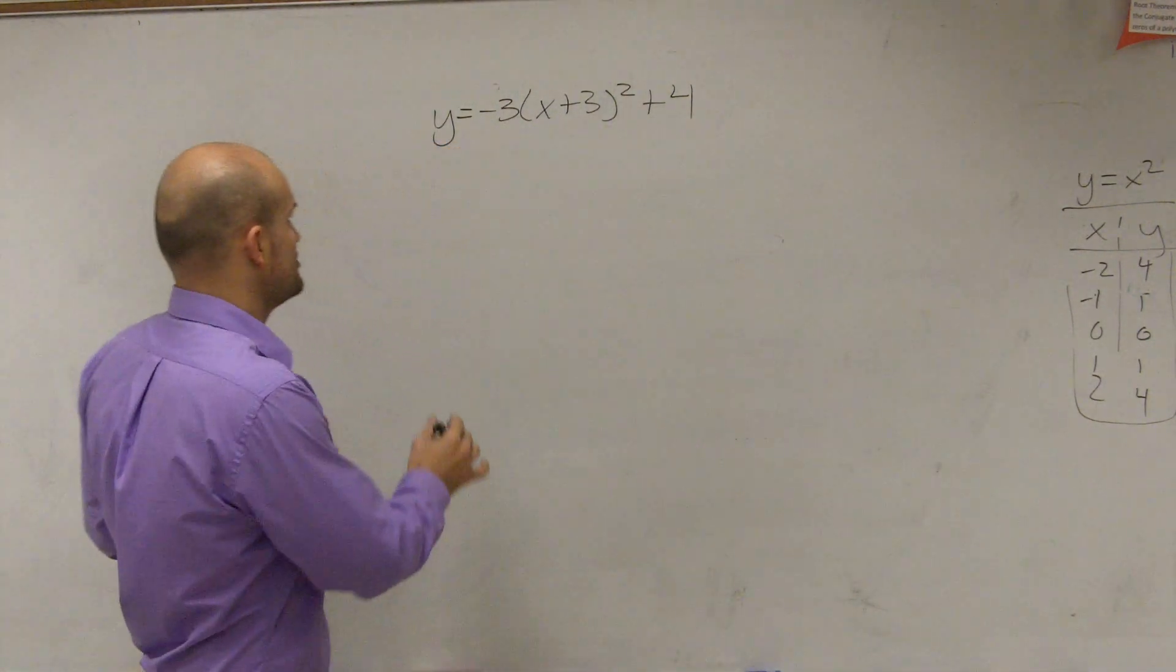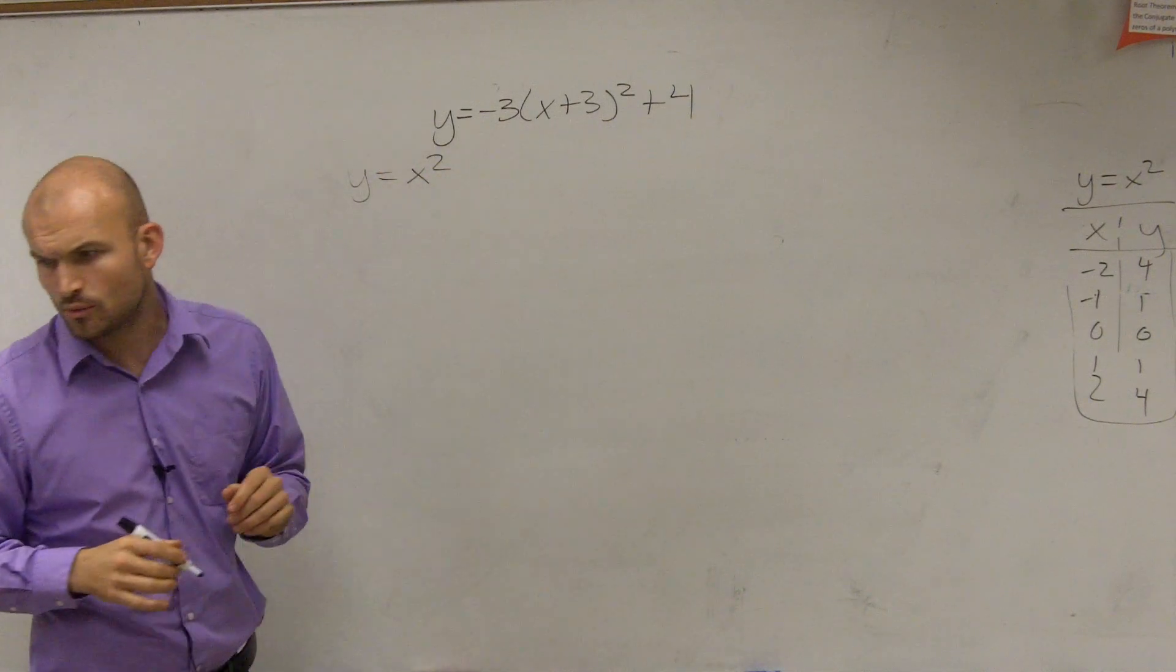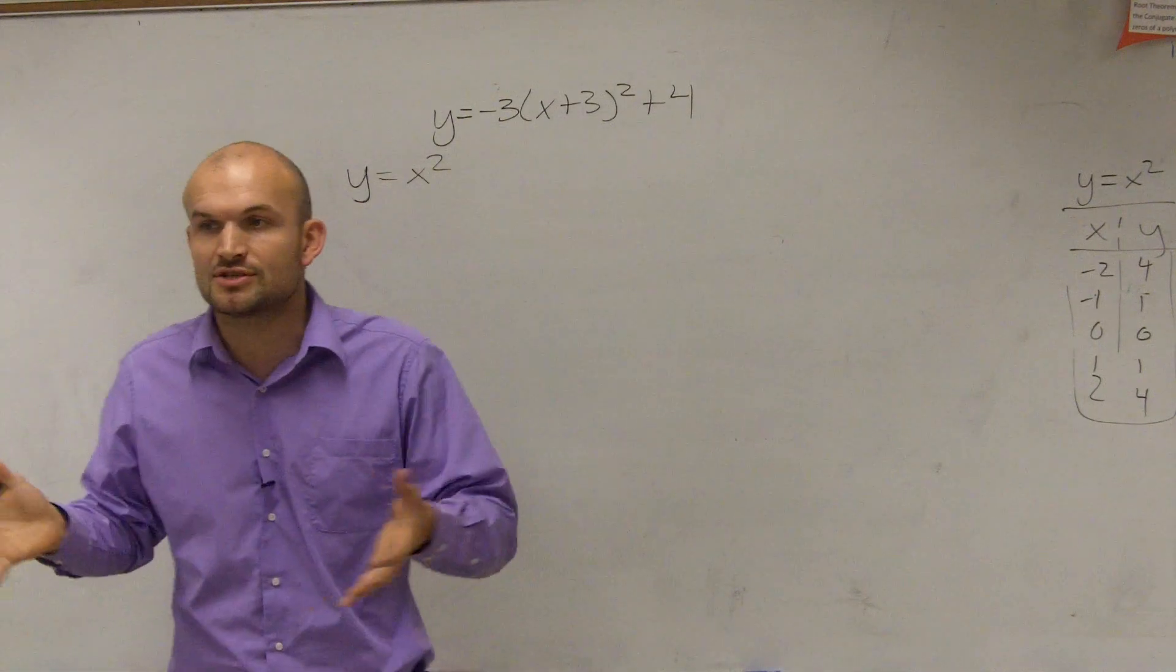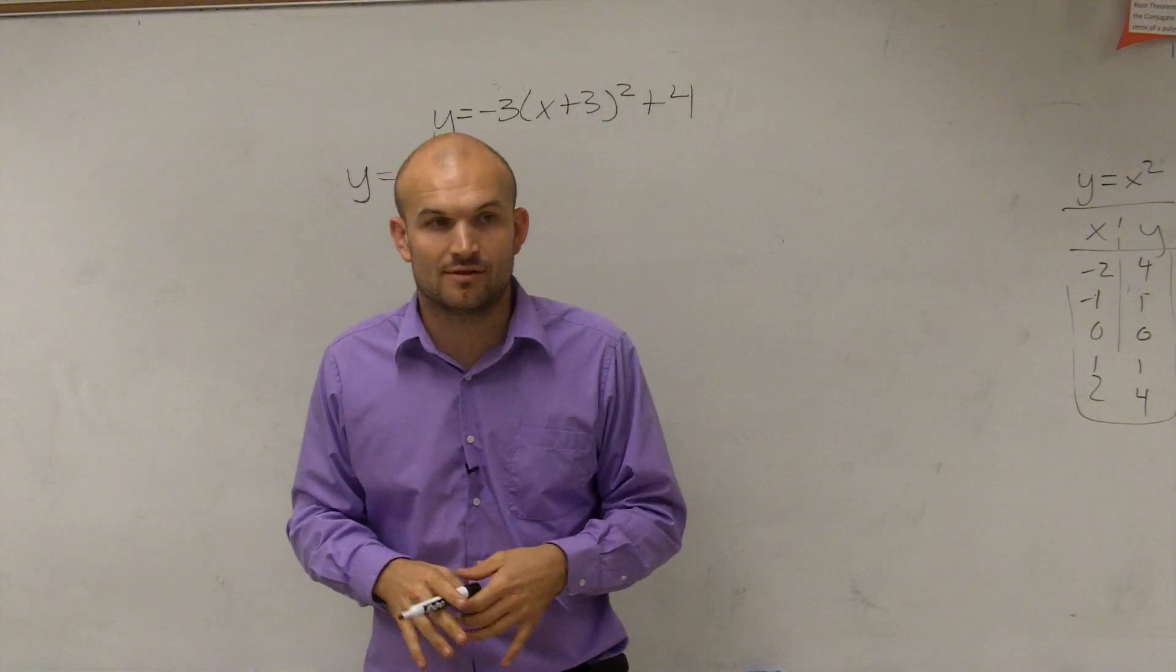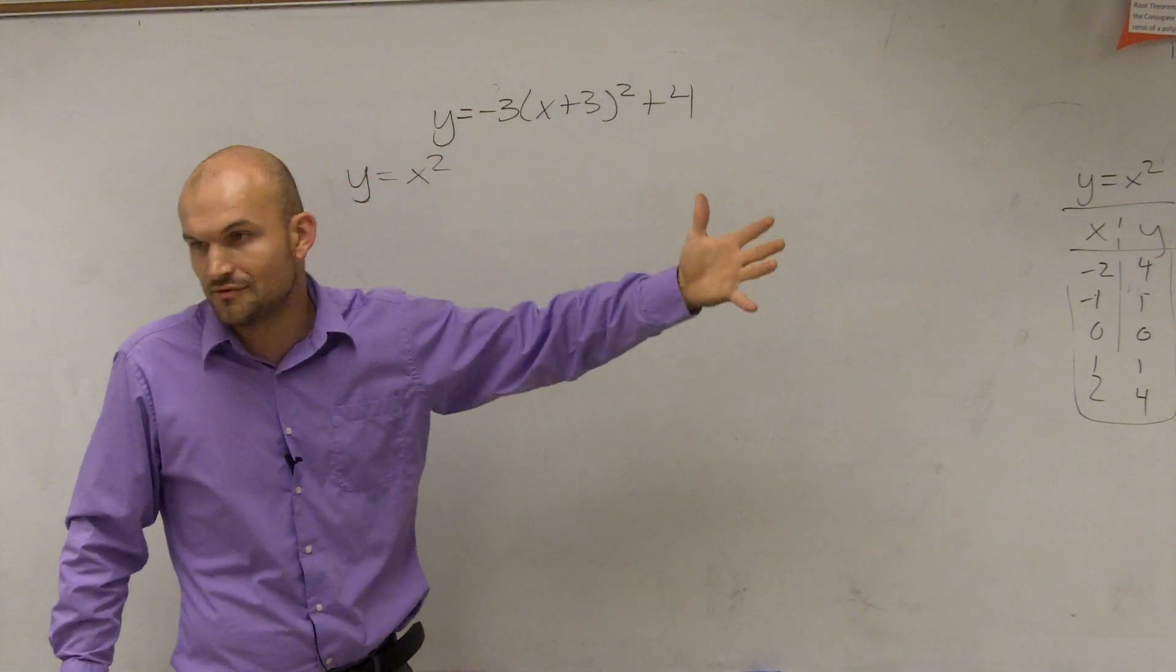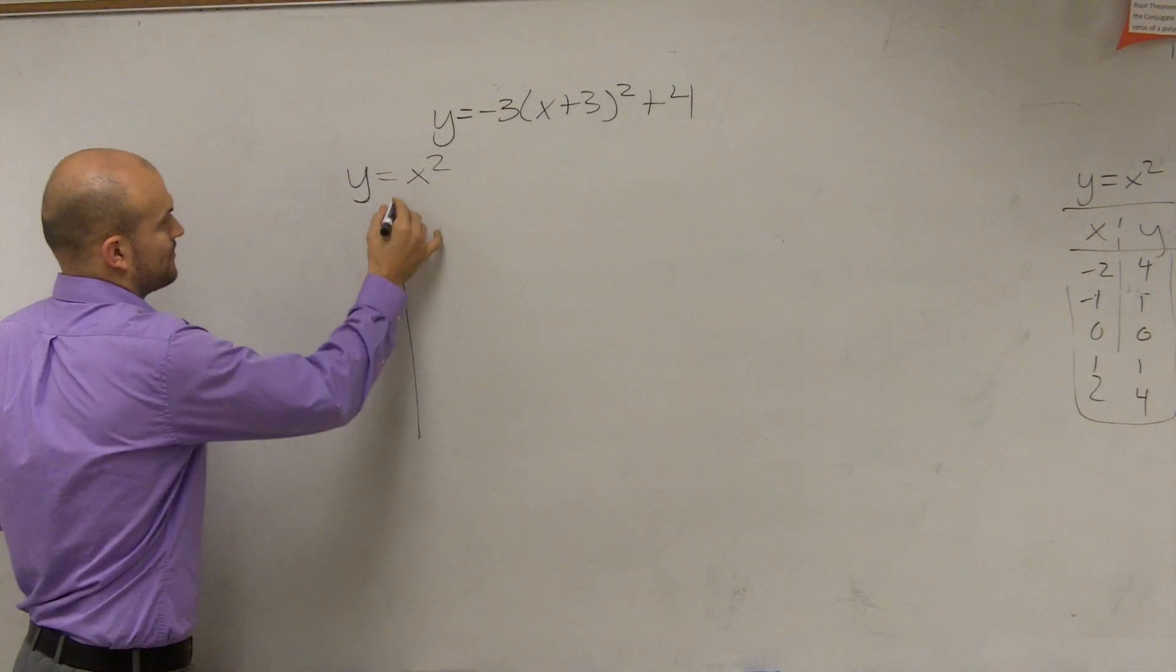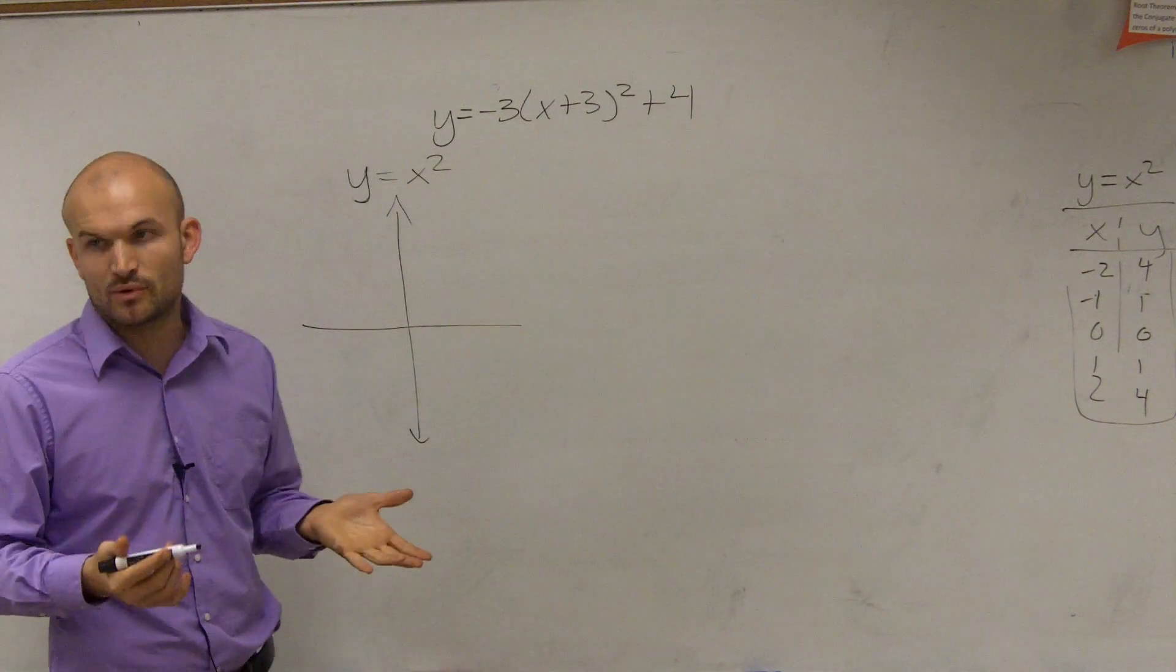So the first thing I'm going to do is graph y equals x squared, and that was question number one as well. To graph this equation, you guys have to know this is what we call our parent function. You have to know at least what the parent function looks like, and then it's going to make using this method very simple. Rather than doing all the stuff we've done before, let's understand what the x squared graph looks like.